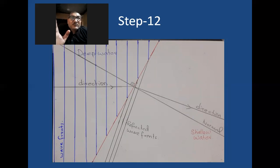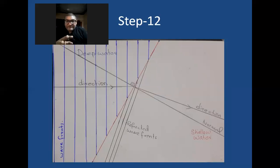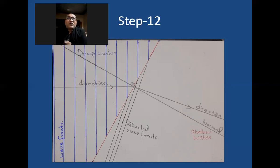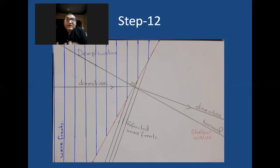In your syllabus, sometimes they ask you to draw the wavefronts for sound waves also, and the behavior of sound waves will be different. When water waves enter a portion where their speed decreases, they bend towards the normal. But the behavior of sound waves is totally different — if sound wavefronts enter a medium where the speed decreases, they will bend away from the normal. The behavior of sound waves is different from the behavior of water waves.